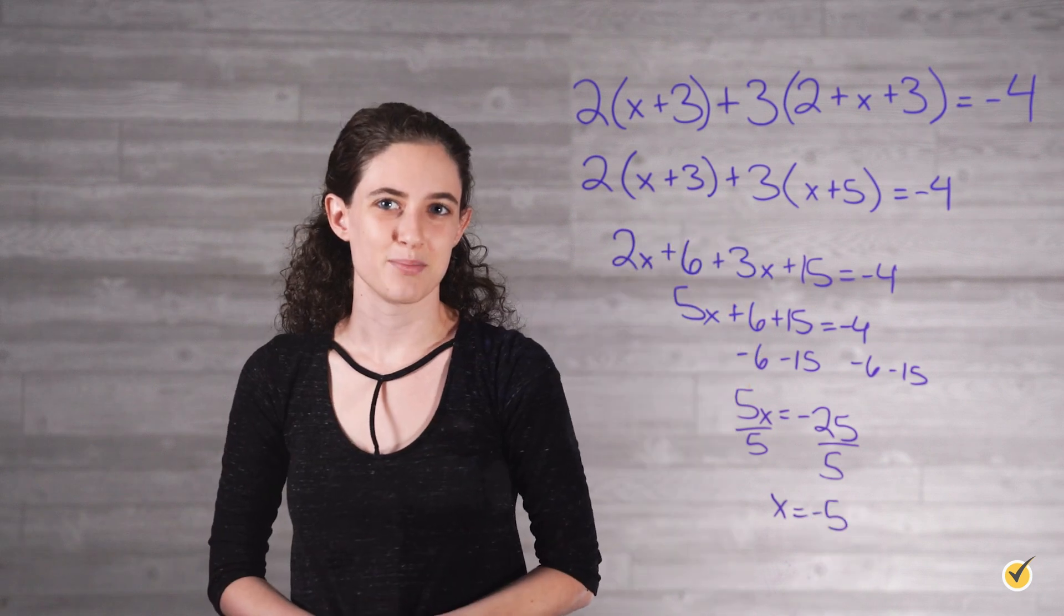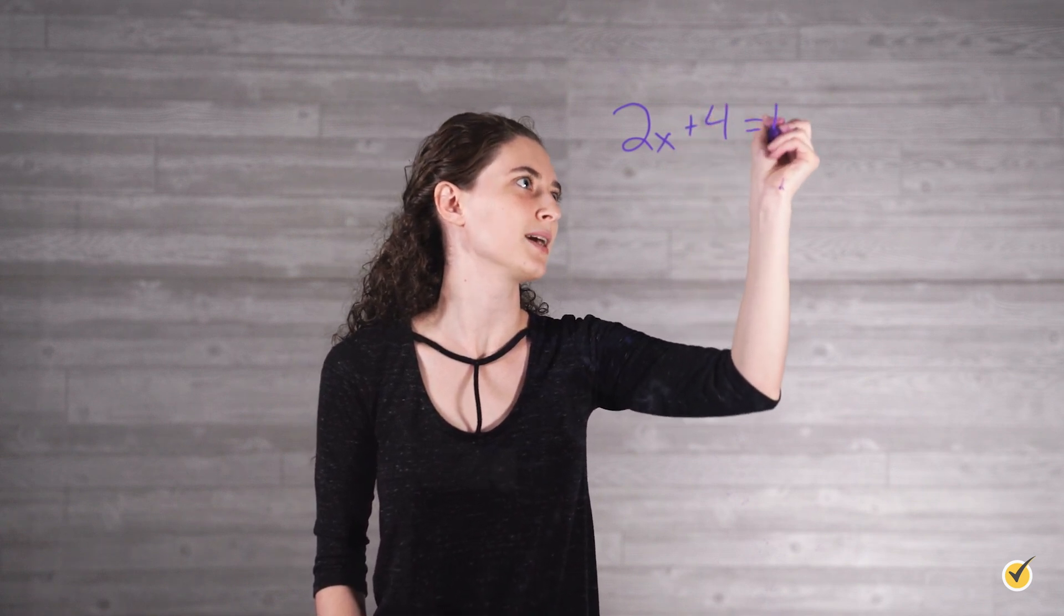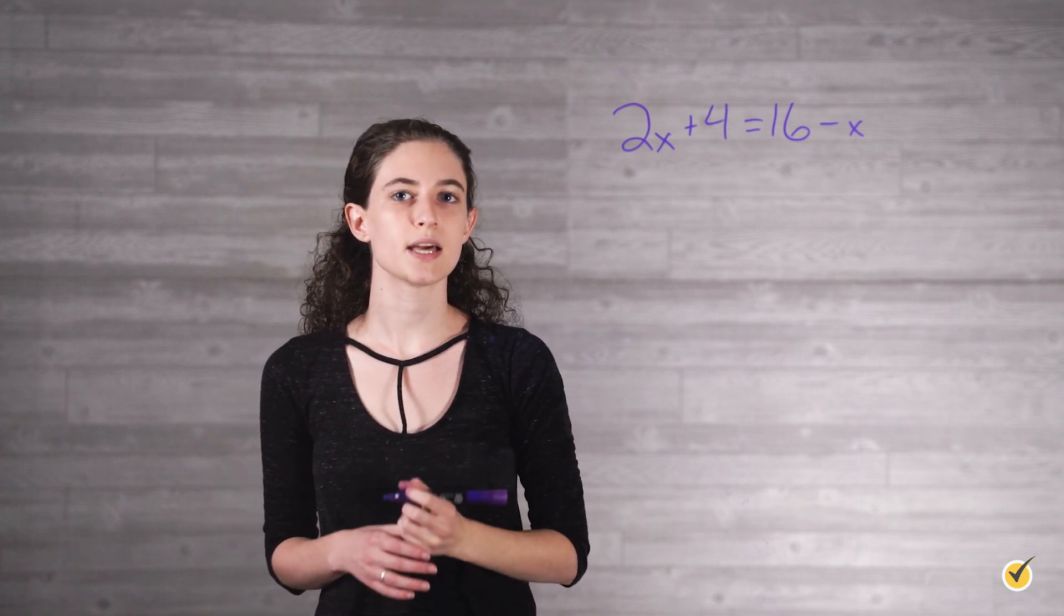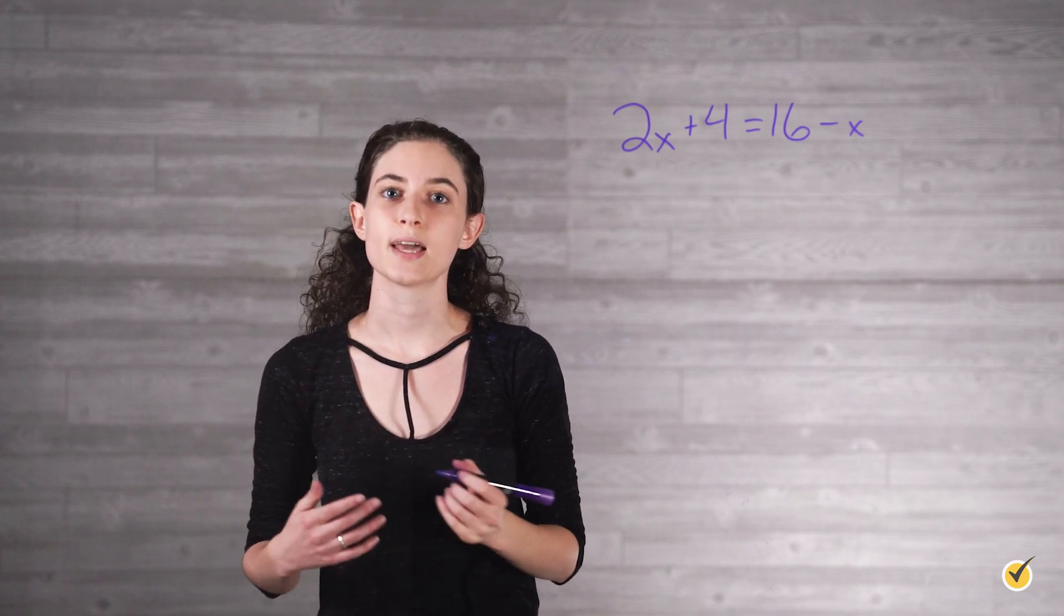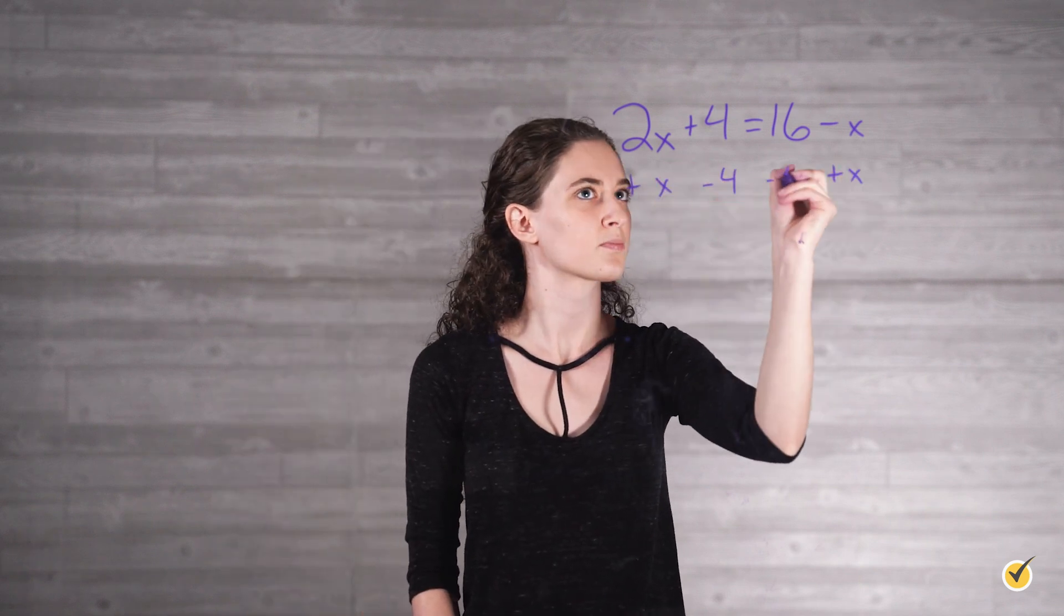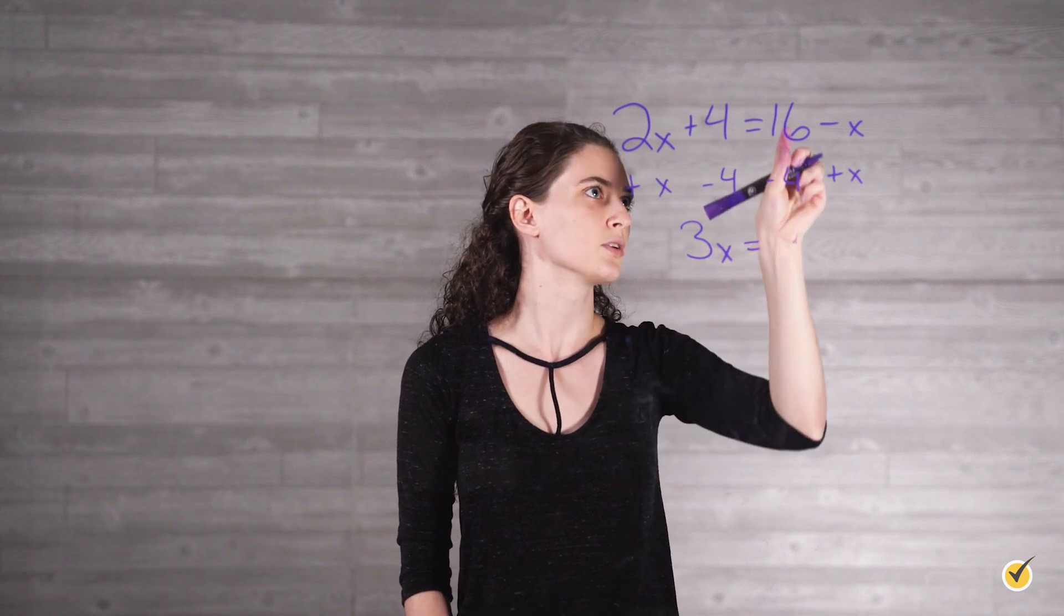Let's look at another example. In the equation 2x plus 4 equals 16 minus x, we need to get the x terms on one side and the numbers on the other. We can add x and subtract 4. This will give us 3x equals 12.